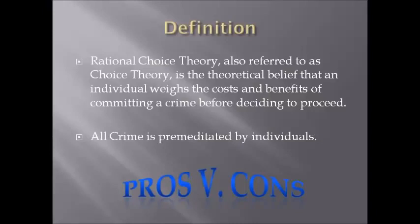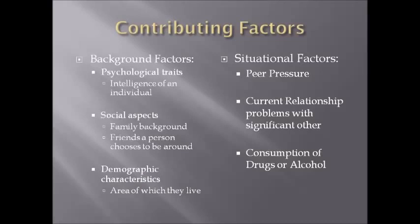While this theory holds that all crime is premeditated, there are contributing factors that can lead a person towards committing a crime or choosing not to. Such factors include background factors like psychological, social, or demographic characteristics, as well as situational factors such as things going on in their life, peer pressure from friends, conflicts with a significant other, or the consumption of alcohol or drugs at the time the crime was committed.